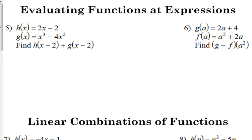Let's look at number 5. We're adding H and G, but then we've got this X minus 2 thing going on. This is the same thing — it's like a combination of number 1 and number 3. We're going to plug this expression in. X minus 2, we're going to look at that just like it was a number, like 6 from number 1. We're going to plug that in everywhere we see X, and then we're going to add the two functions together.